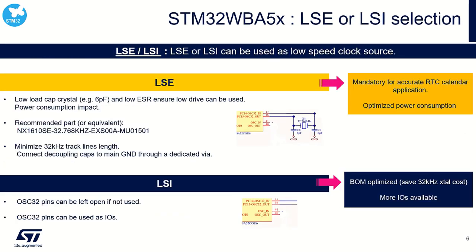Let's talk about LSE or LSI selection. While the 32 MHz crystal is mandatory, for the low-speed clock it is optional. We can use either the LSE — an external 32 kHz crystal — or we can use the LSI. The choice is basically a matter of cost versus power consumption. If we want the best current consumption performance, we should use the LSE.